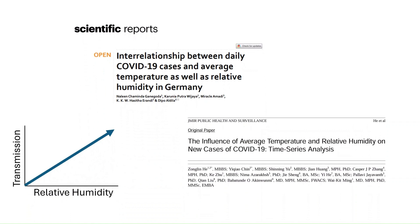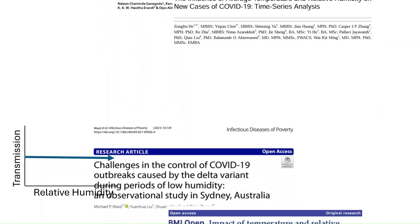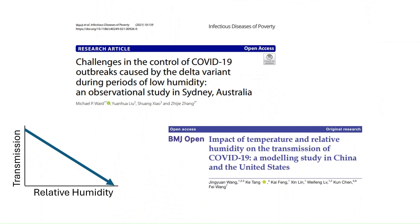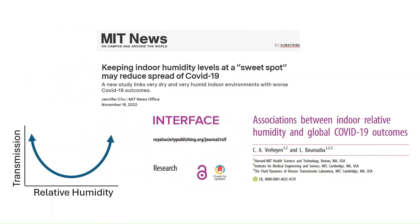Over the course of the COVID-19 pandemic, numerous studies have been published on how humidity affects airborne transmission. Some show that transmission correlates with humidity, suggesting we can limit it by lowering humidity. Others clearly show transmission goes up when humidity is lowered, suggesting we should raise it instead. And then there's a third group of studies showing transmission is lowest when humidity is between 40 and 60 percent — the so-called 'sweet spot.'